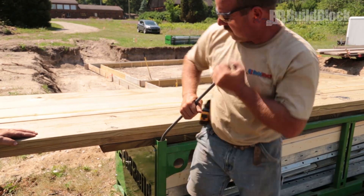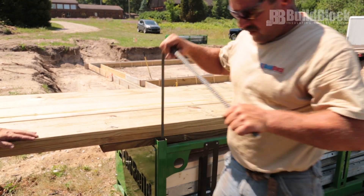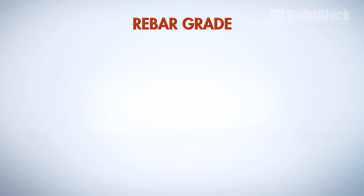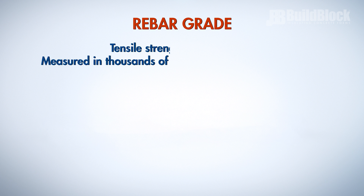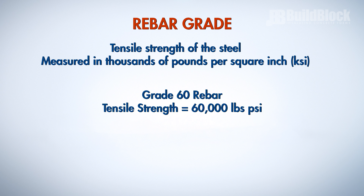When estimating, it is important to choose the right grade and size of rebar. Rebar grade refers to the tensile strength of steel and is measured in thousands of pounds per square inch. For example, grade 60 rebar will have a tensile strength of 60,000 pounds per square inch. Most all rebar used today is grade 60.